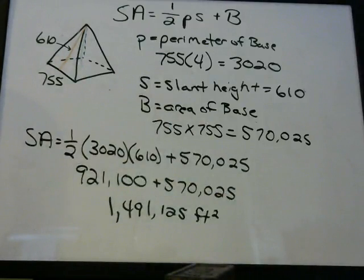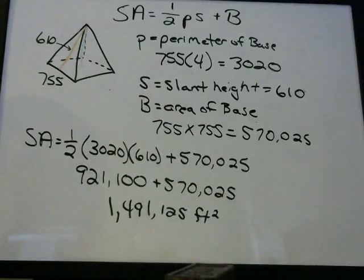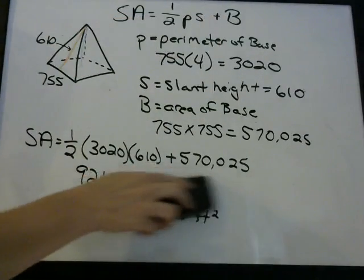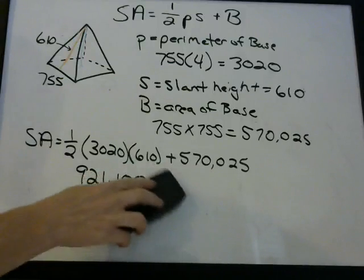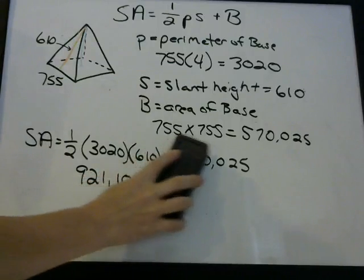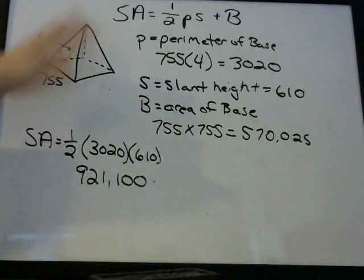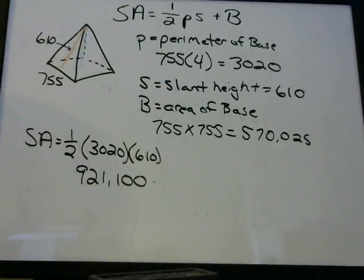If the problem said don't count the bottom — what's the surface area without the bottom? We're just concerned about the sides of the pyramid. We take off the base portion, and our answer would be 921,100 square feet. That's the surface area of the four triangular sides — the surface area of the pyramid without the bottom.